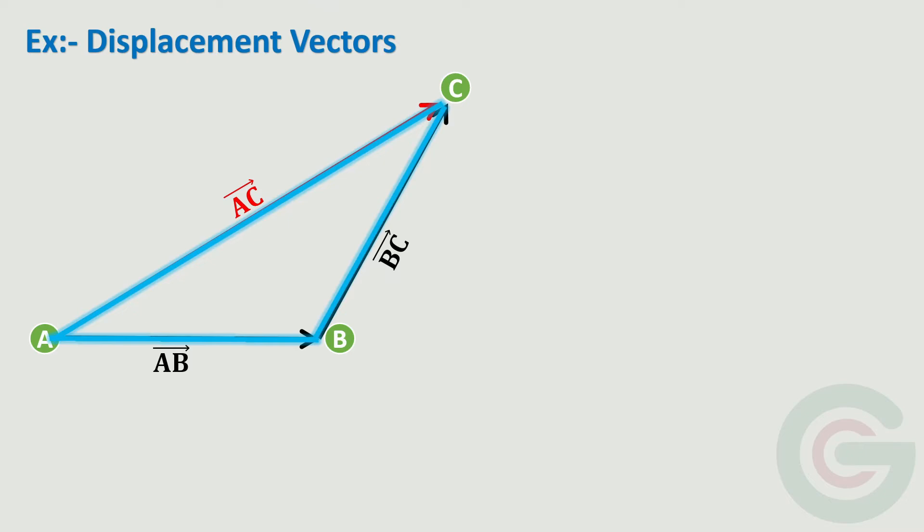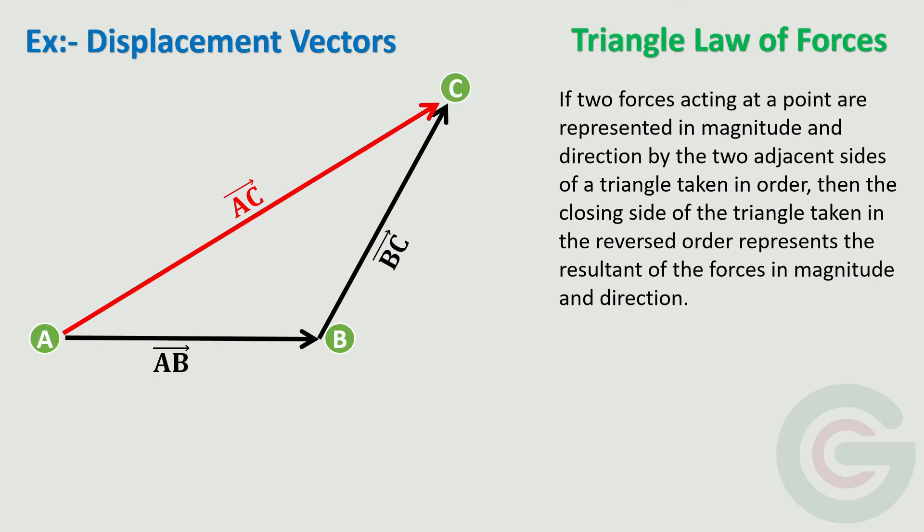Now let's define the triangle law of forces. If two forces acting at a point are represented in magnitude and direction by the two adjacent sides of a triangle taken in order, then the closing side of the triangle taken in the reversed order represents the resultant of the forces in magnitude and direction.